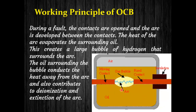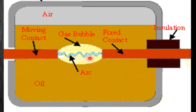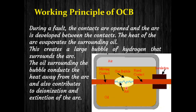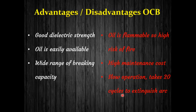In the OCB, there is a chamber with fixed and moving contacts. When a fault occurs and the contacts separate, an arc is produced. The heat of the arc evaporates the oil, creating a large bubble of gas which mainly consists of hydrogen. This bubble surrounds the arc from everywhere, and the oil surrounding the bubble conducts heat away from the arc, helping to cool, deionize, and extinguish the arc.